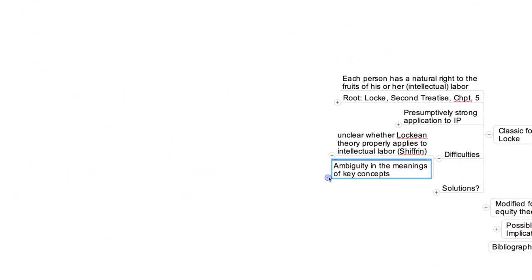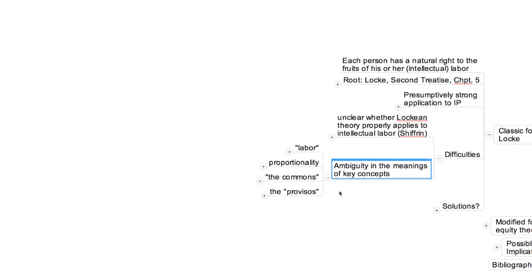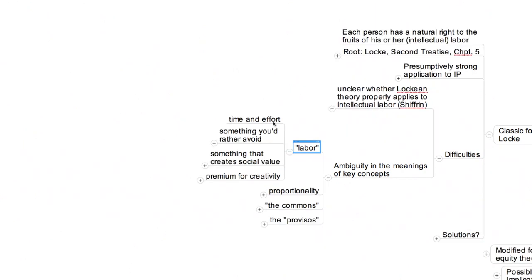Perhaps the most fundamental is what sort of labor is deserving of a reward? What counts, more specifically, as virtuous intellectual work? There are at least four possibilities, again listed in the map. The first, which seems closest to Locke's original understanding, is that labor consists of time and effort, hours spent in a chair typing or standing in front of an easel painting. But as Justin Hughes has shown, we often speak of meritorious work in other terms, tacitly defining it as something you'd rather avoid doing or as something that creates social value.